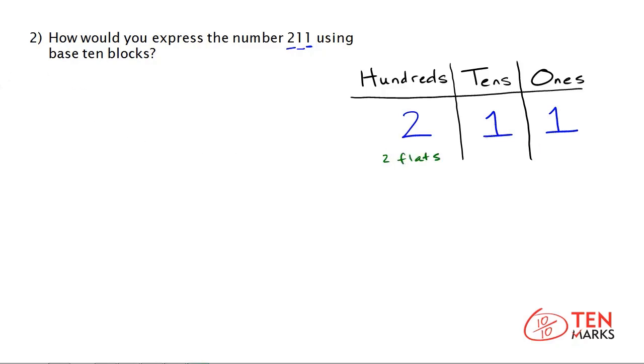Now, the next number here is the tens, and there is one in this place value, so you will have one rod. And lastly, I see that the ones place also has the digit one, which means you will have one cube.